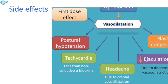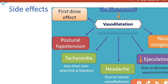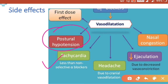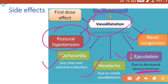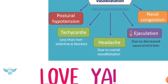Side effects of alpha blockers: the initial dose causes postural hypotension, but tolerance develops to this adverse effect with continued use. Marked tachycardia can occur due to reflex increase in sympathetic discharge. Other side effects include headache, decreased ejaculation due to decreased vasoconstriction, and nasal congestion. Vasodilatation, the main action of alpha blockers, is responsible for most of these side effects.